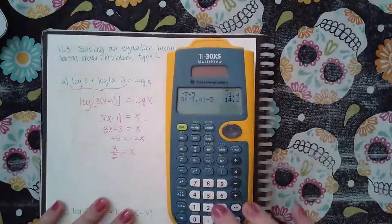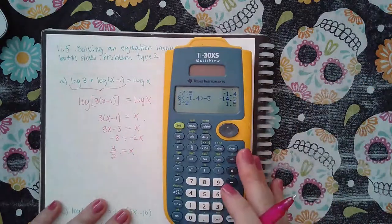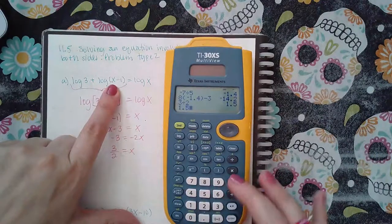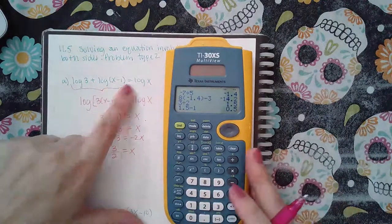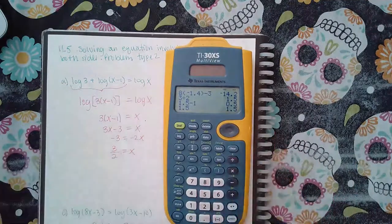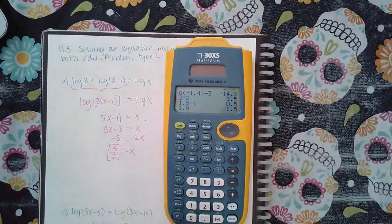Make sure that three halves creates positive arguments. So three halves is the same as 1.5, so 1.5 minus 1 is a positive number, and then 1.5 itself is a positive number, so this one does check out into both arguments, so it is our solution.